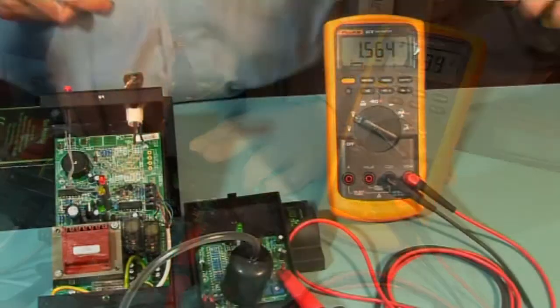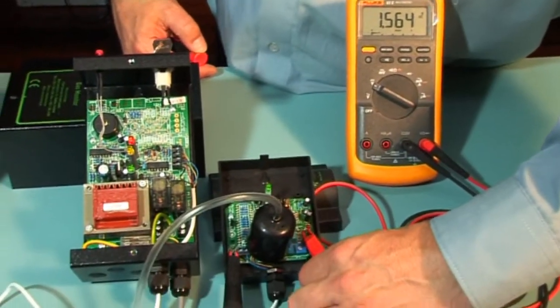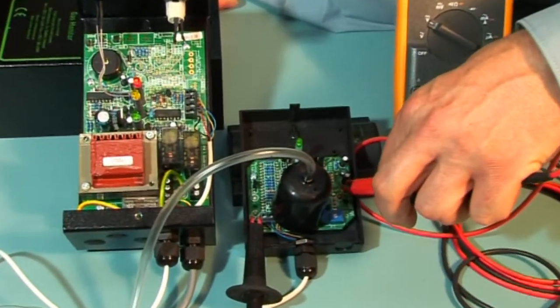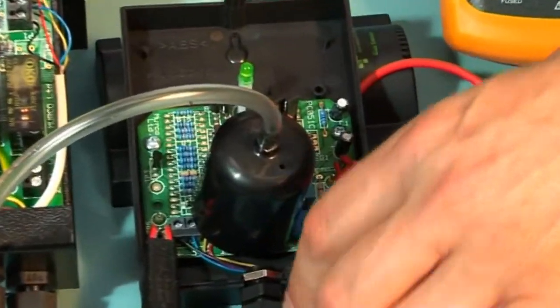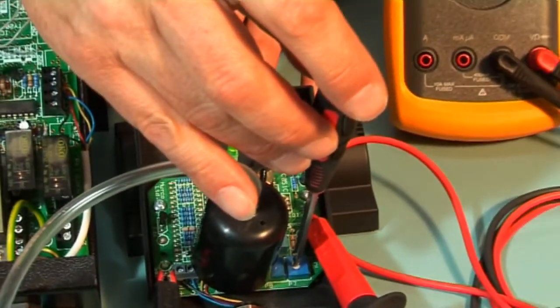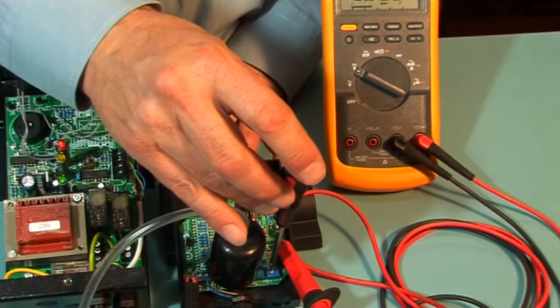Then, moving the positive lead from TP2 to TP1, adjust P7 to the higher alarm voltage and adjust P7 to approximately 50 millivolts below the second recorded voltage.